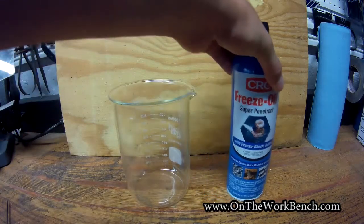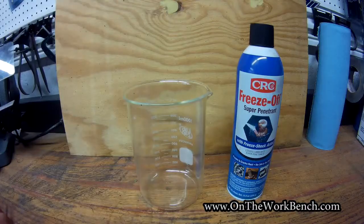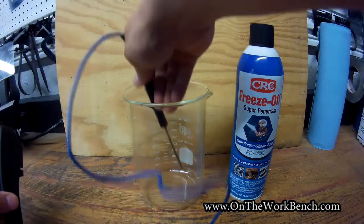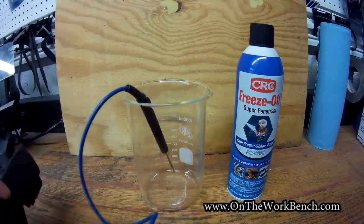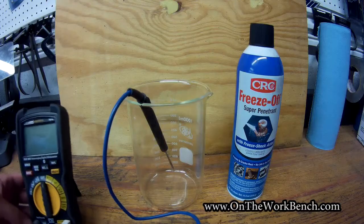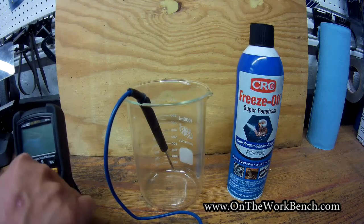So I've got a beaker here and my freeze-off can, and I've got a multimeter with a test probe that I'm going to put into the beaker. Then we're going to spray the test probe with the freeze-off and my multimeter here will give us the temperature.